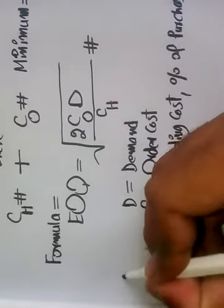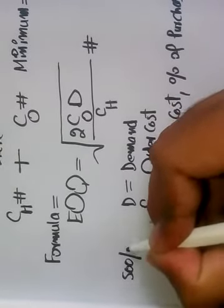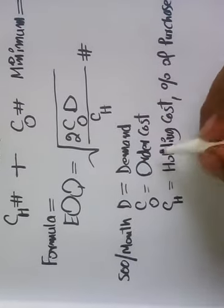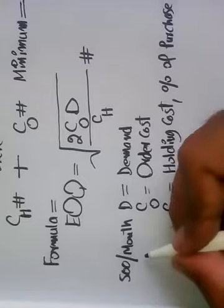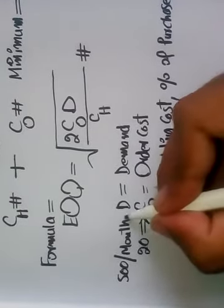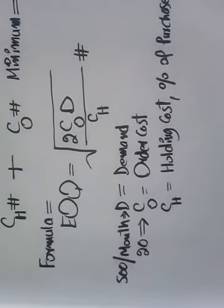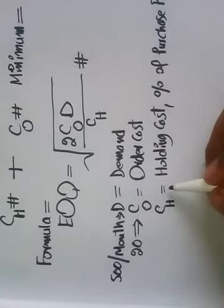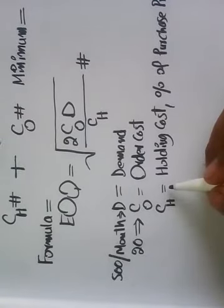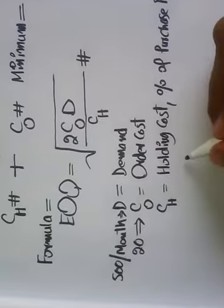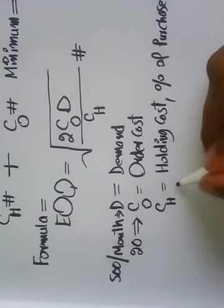Demand is 500 per month and ordering cost is 20. Holding cost is 20 percent of purchase price.